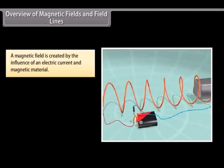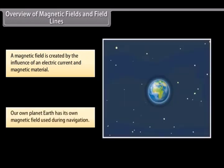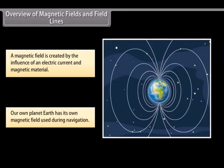Overview of magnetic fields and field lines. A magnetic field is created by the magnetic influence of an electric current and magnetic material. Our planet Earth produces its own magnetic field, which is an important factor during navigation.